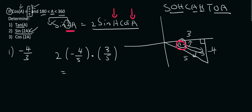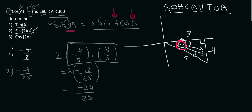And now I'm just going to multiply these 2 together over here, which is just going to be minus 12 over 25, and then I'll multiply that by 2, which is just going to be negative 24 over 25.